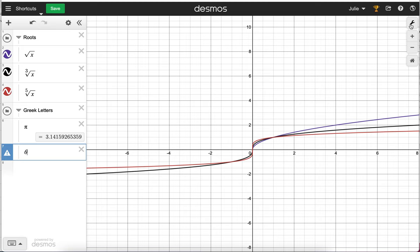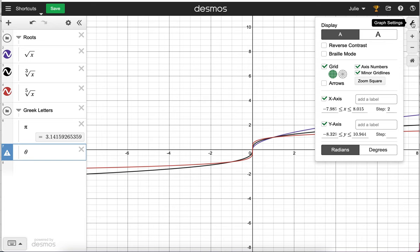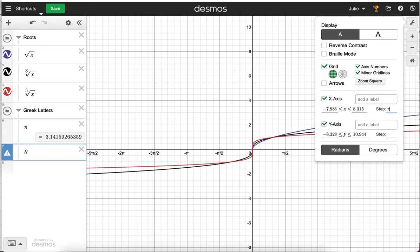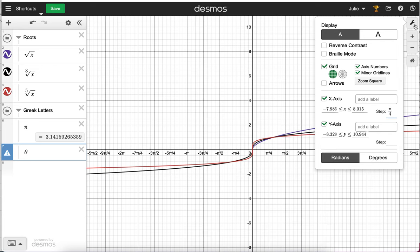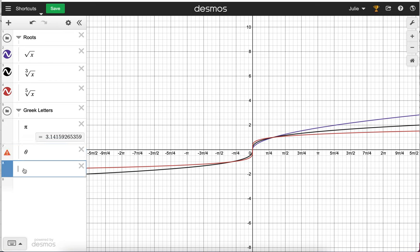Also, if you want to change your axes, a lot of my students have trouble with this, so you just hit the settings bar and you can type pi, and it'll change it to pi. You can also put pi over 4 if you want to change it that way, and that's a great way to graph trigonometric functions.